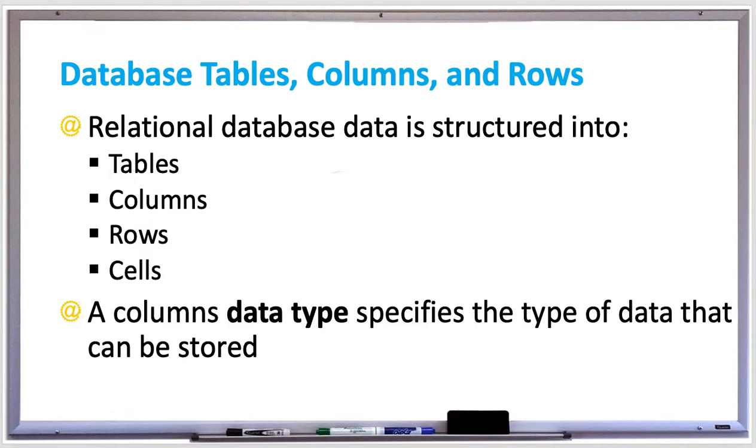Relational database data is structured into tables, which is a collection of data placed in columns and rows, which looks similar to an Excel table. Tables must have at least one column and row, otherwise it's called an empty table.